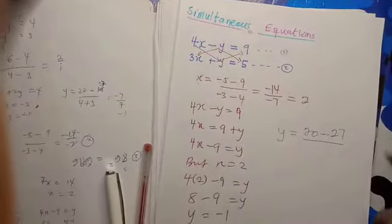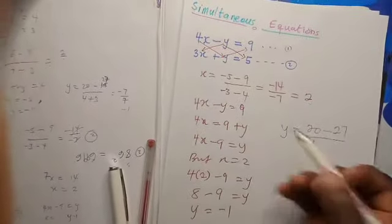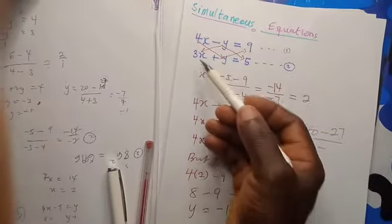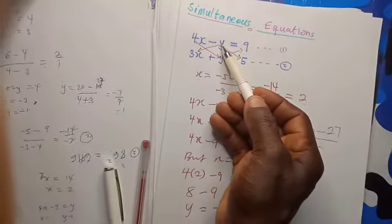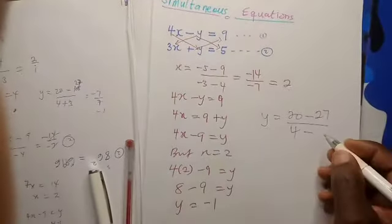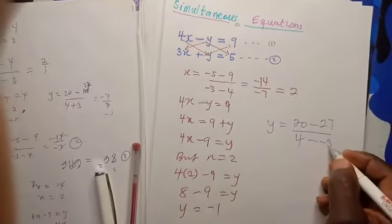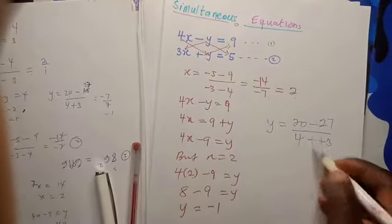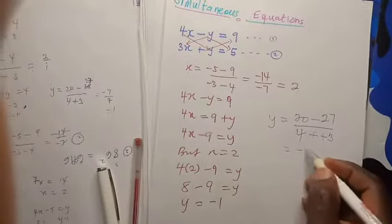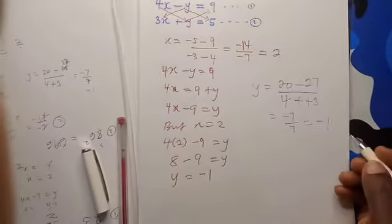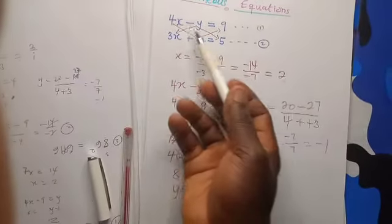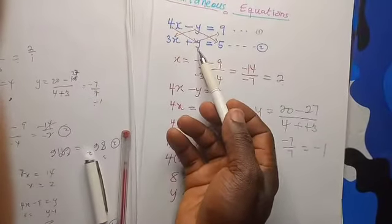This is going to be 3 times 1, that is minus 1, which will give us minus 3. I believe minus minus will cancel to give us plus. So we are going to have negative 7 over 7, which will give you negative 1. So if you put negative 1 in this place or this place, you will still get a value of x to be 2.